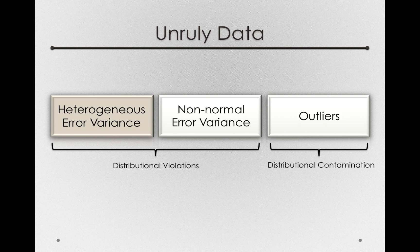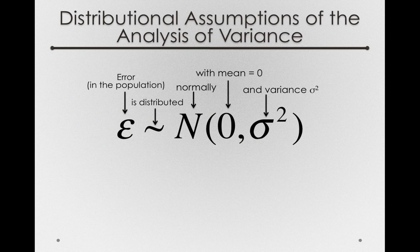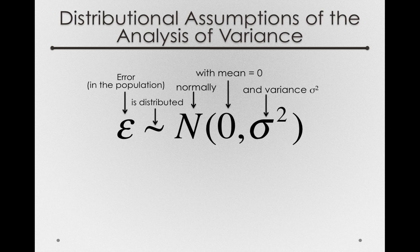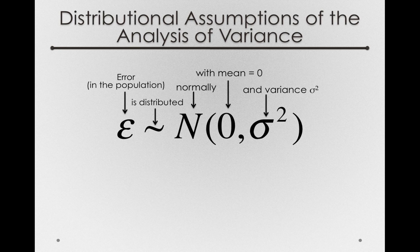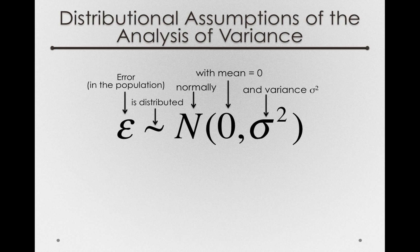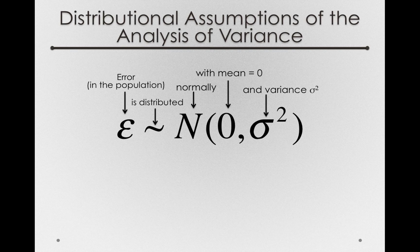In the presence of heterogeneous error variance, one of our assumptions of the analysis of variance would not be met. Remember that we're assuming error in the population has a particular distributional shape—it'll be normal—and we're assuming that it has equal variance. Regardless of which condition we're in, we assume that the variability around the mean of that group will be the same.